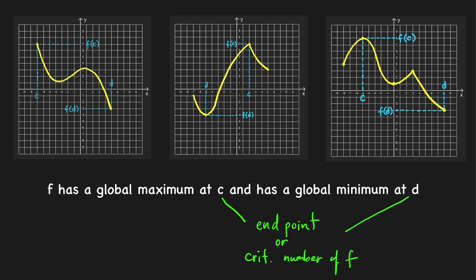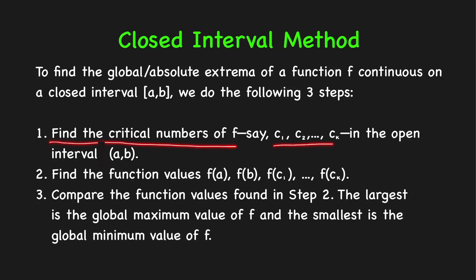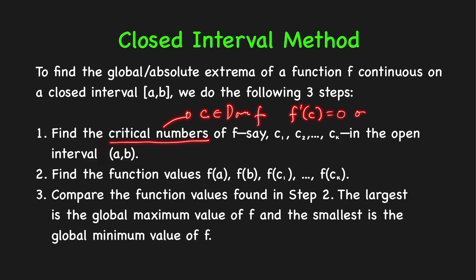This observation suggests that we can apply the closed interval method to find the absolute extrema of a function that is continuous on a closed interval [a, b]. To find the global extrema, we follow three steps. First, we find the critical numbers of f — say c₁, c₂, up to cₖ — in the open interval (a, b). A critical number is a number c in the domain of the function where the derivative at c is equal to 0 or does not exist.